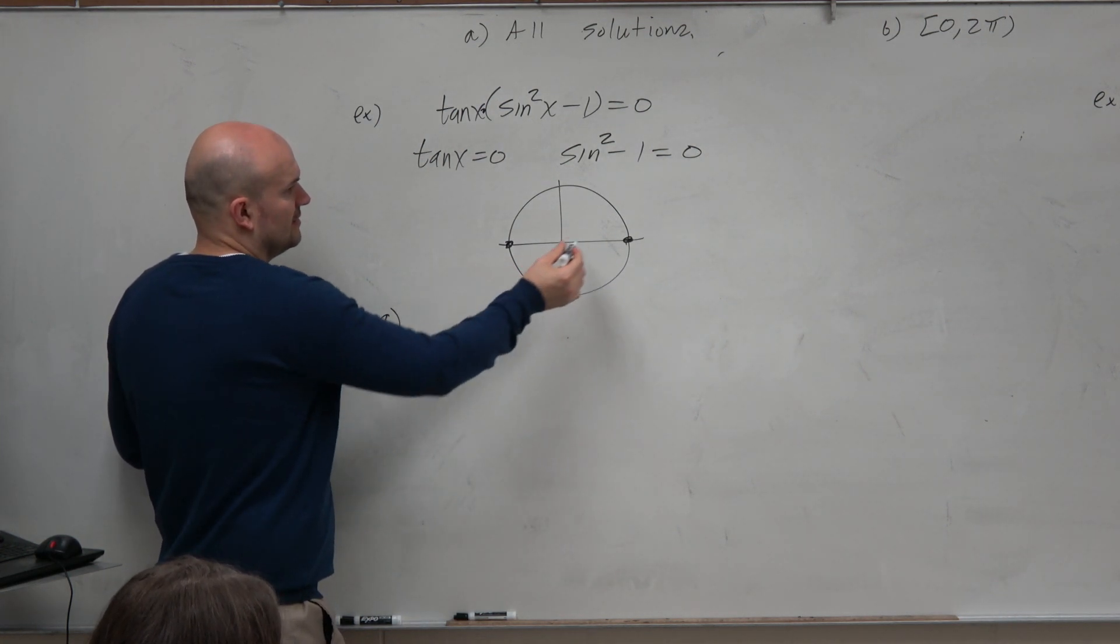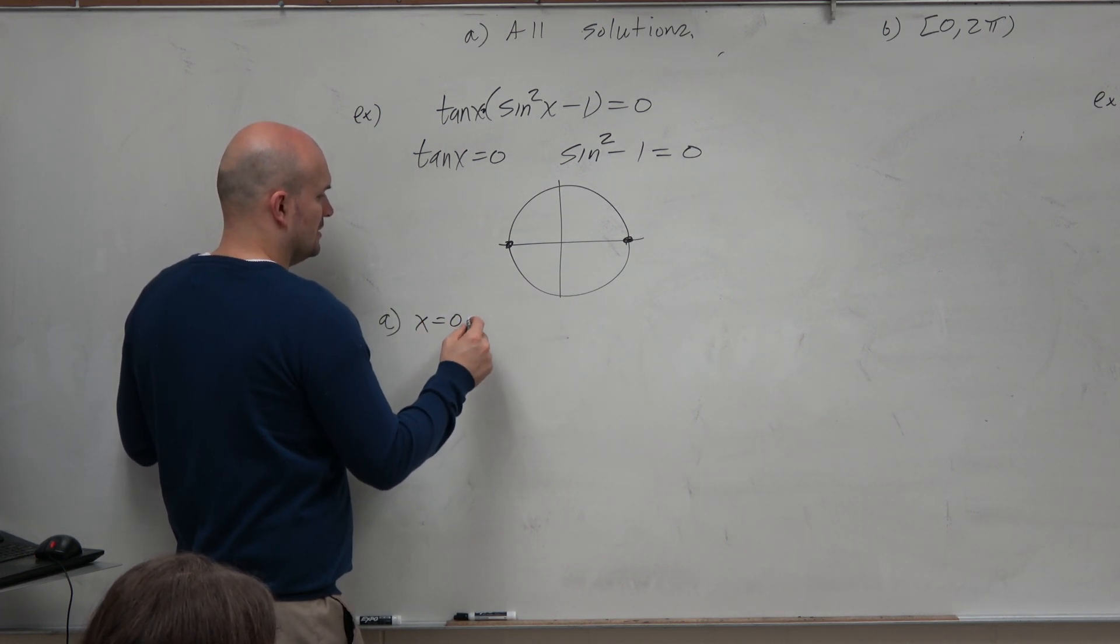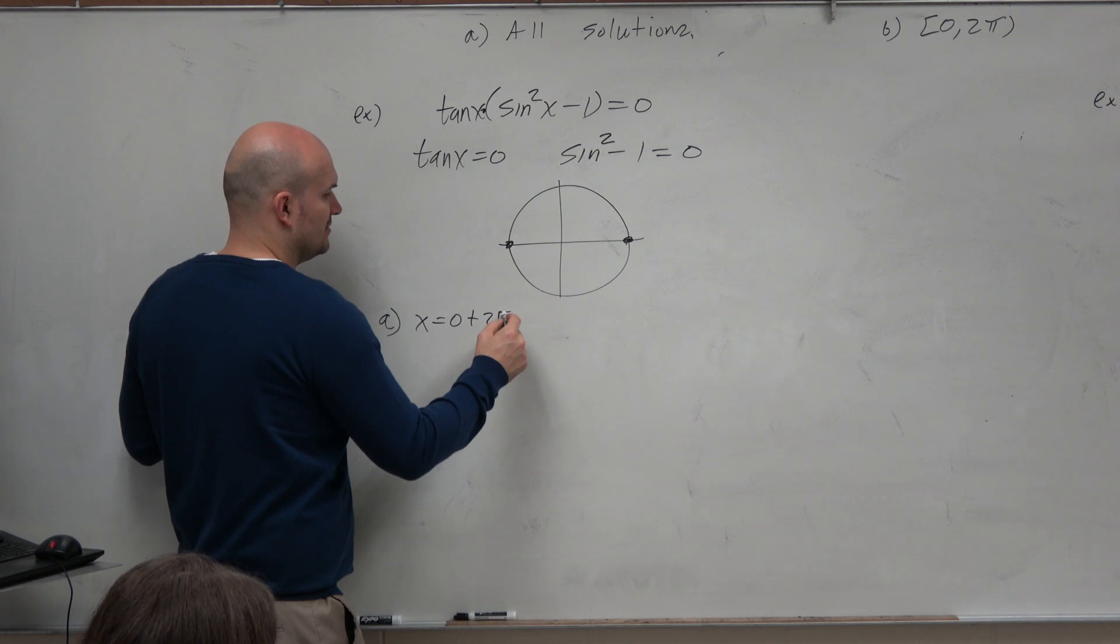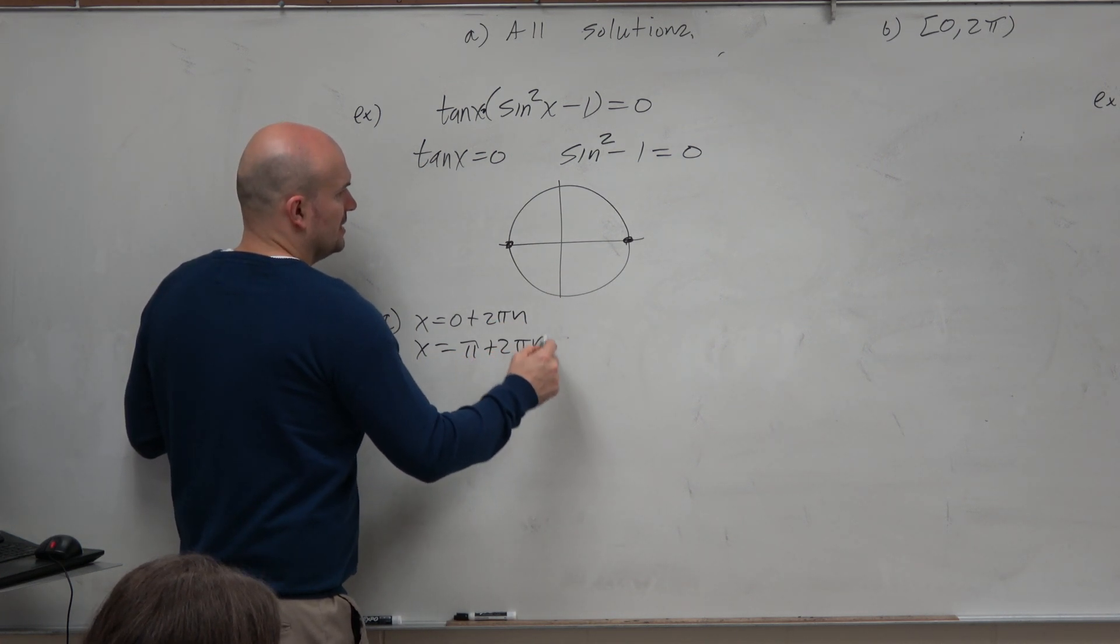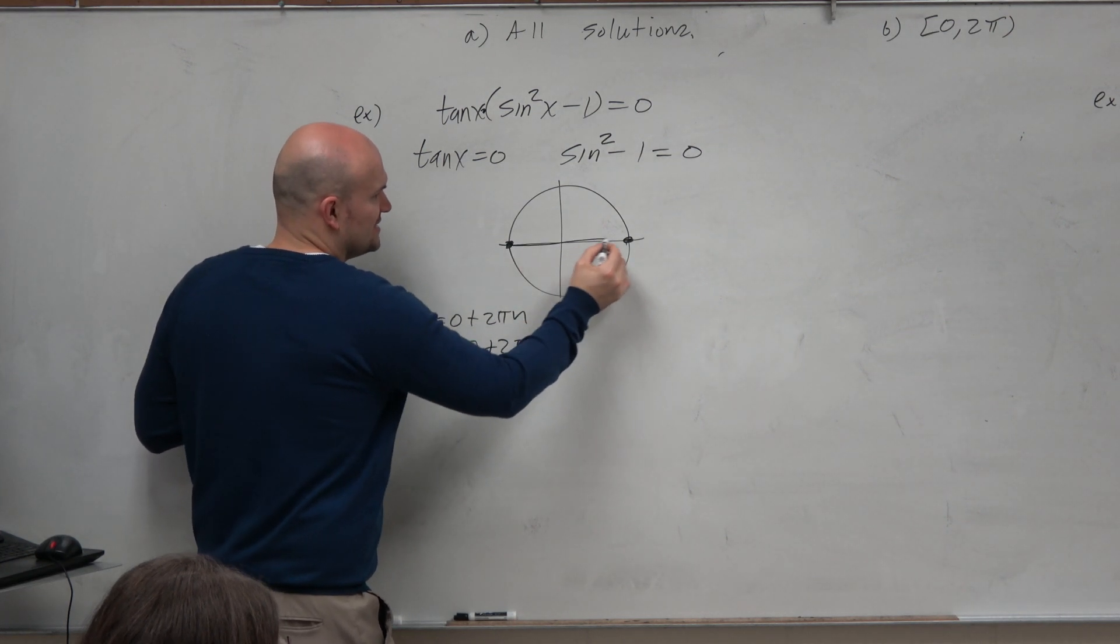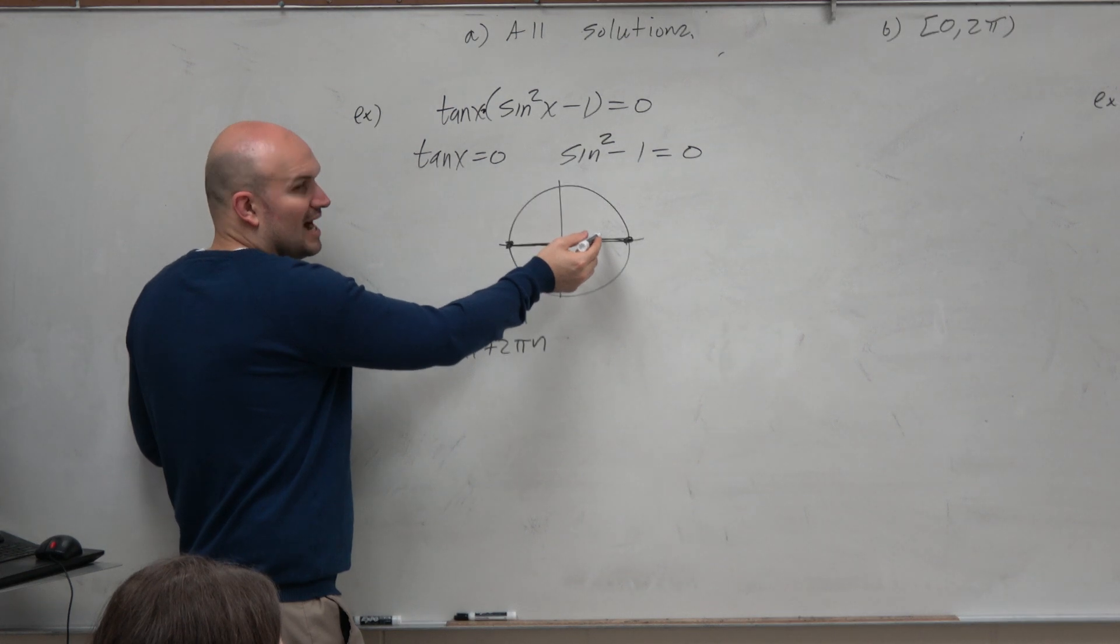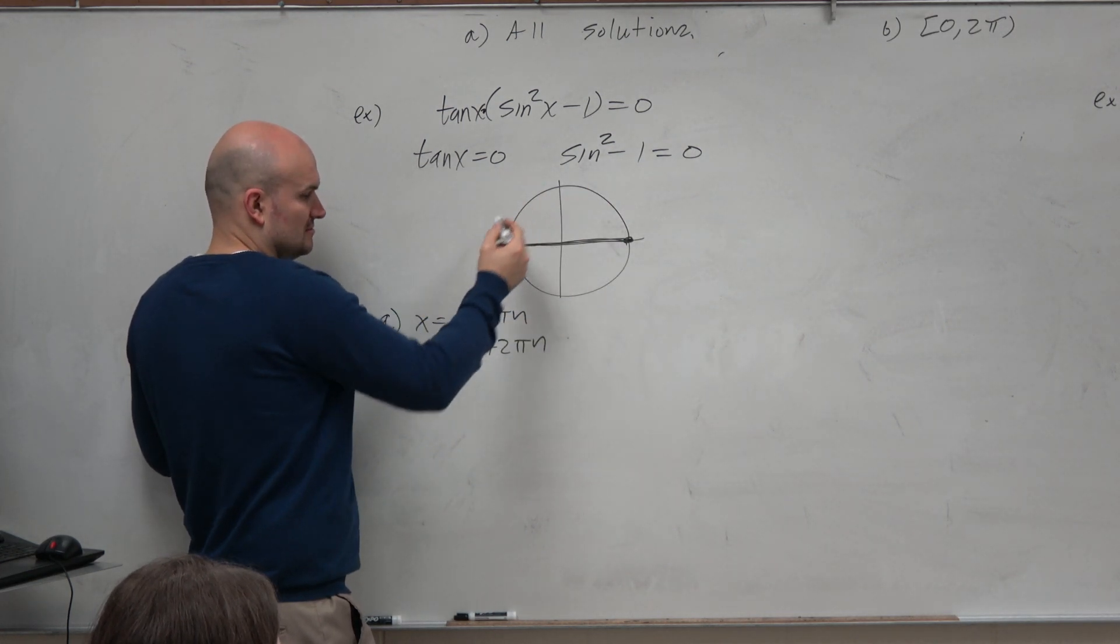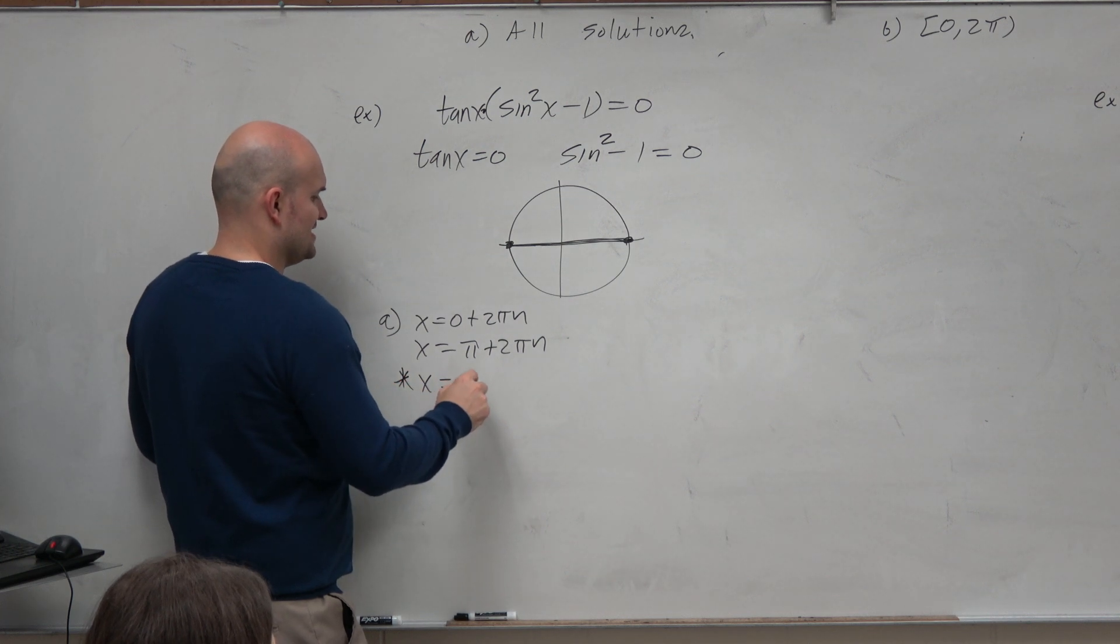So if I want to find, I could say x equals 0. And then you could say plus 2π n, if you want to. x equals π plus 2π n. But again, guys, do we have an easier way to write that? Couldn't we just write π n, right? x equals π n.